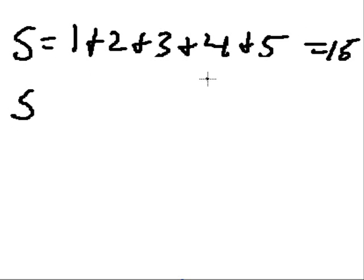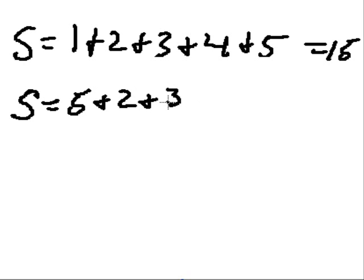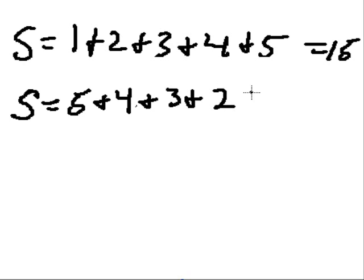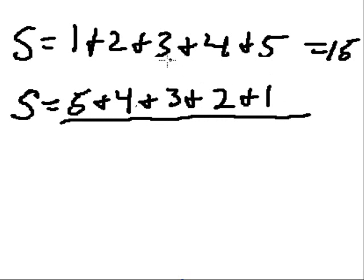Now I'm going to write this again, but this time I'm just going to reverse all these numbers. s is equal to 5 plus 4 plus 3 plus 2 plus 1. I'm going to put an underline there and add these up.